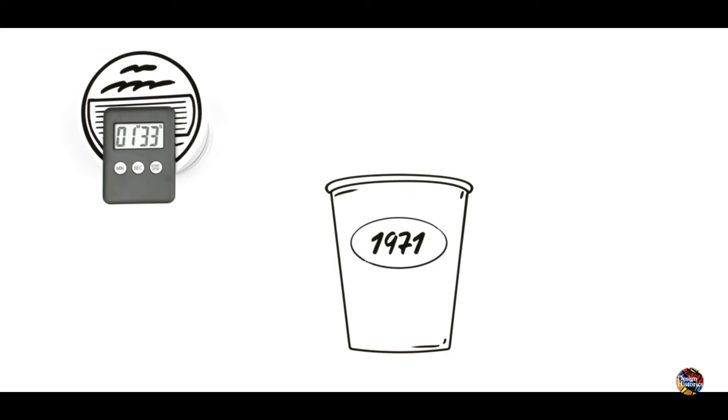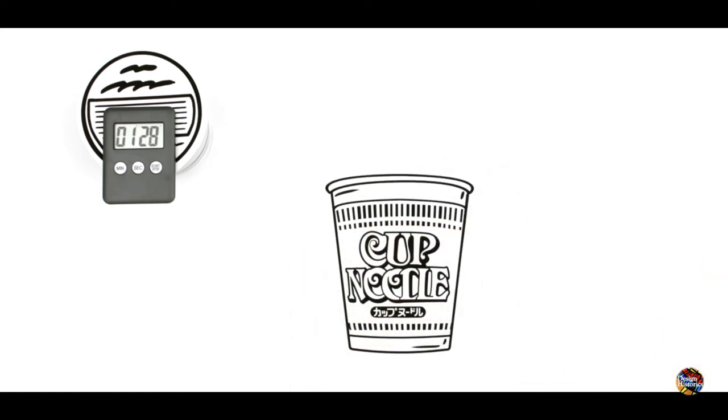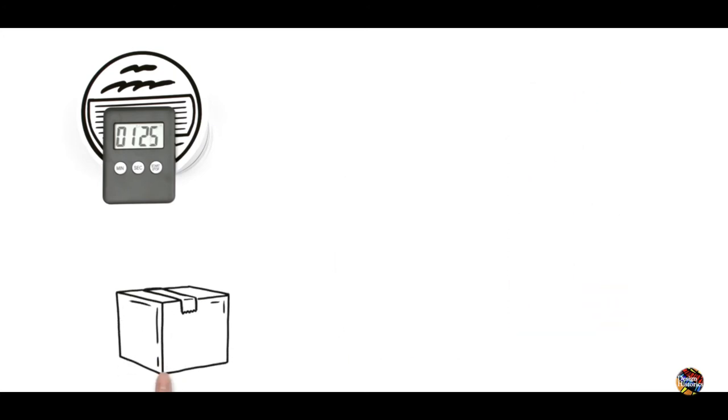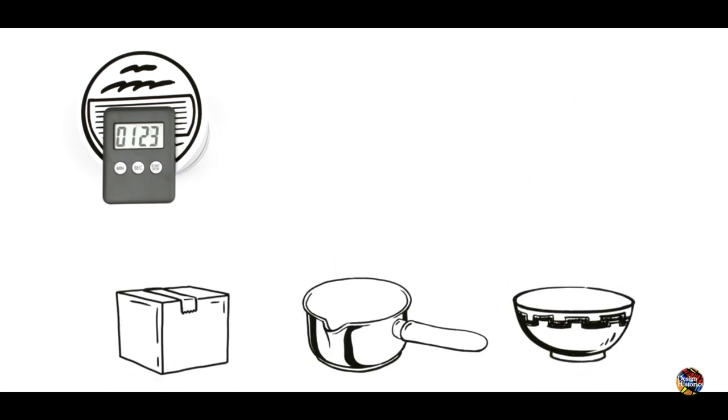1971 saw the launch of the world's first cup ramen product, cup noodles. The cup has three functions. It's packaging, cookware, and tableware. This was a truly revolutionary idea.